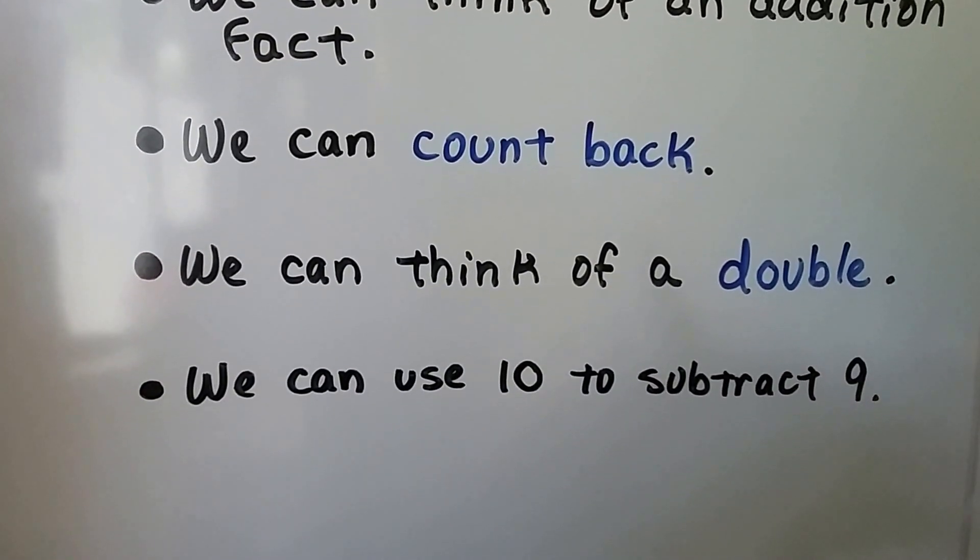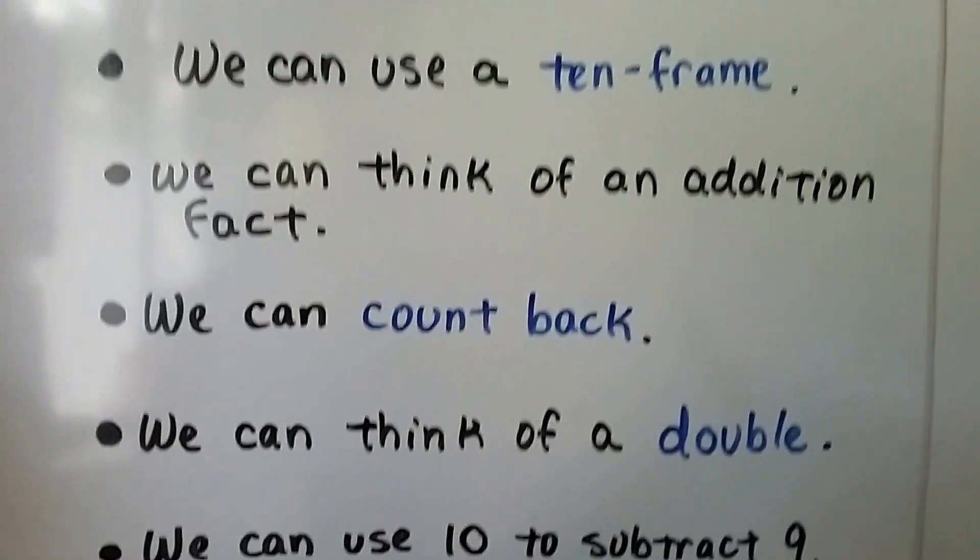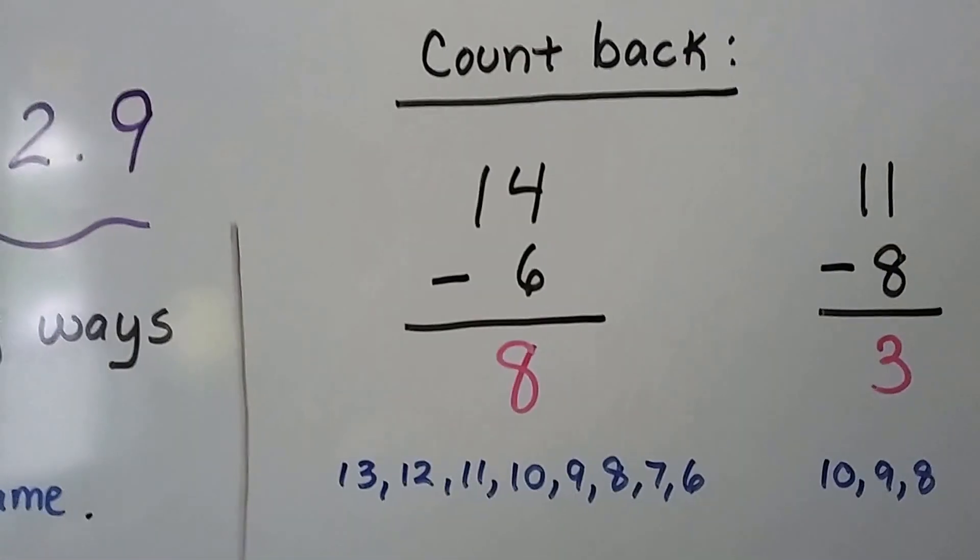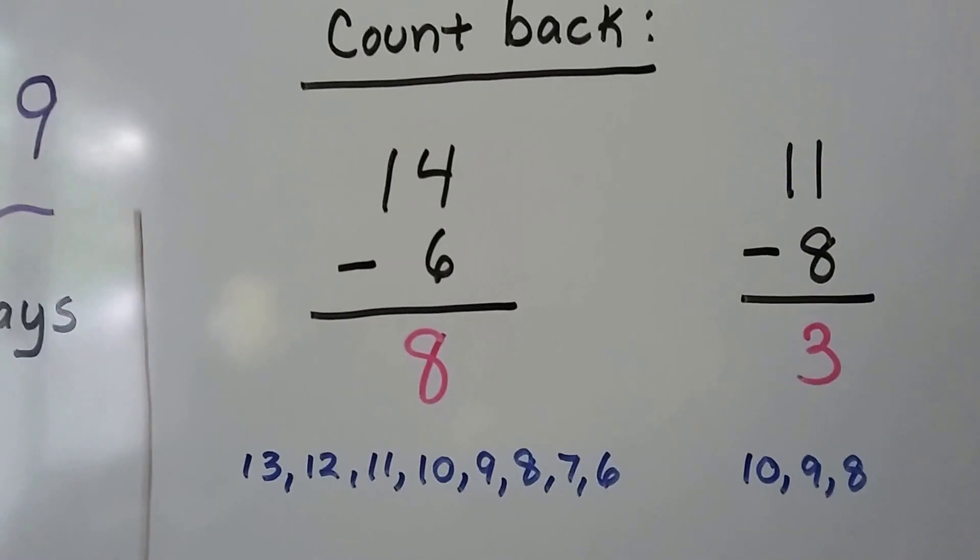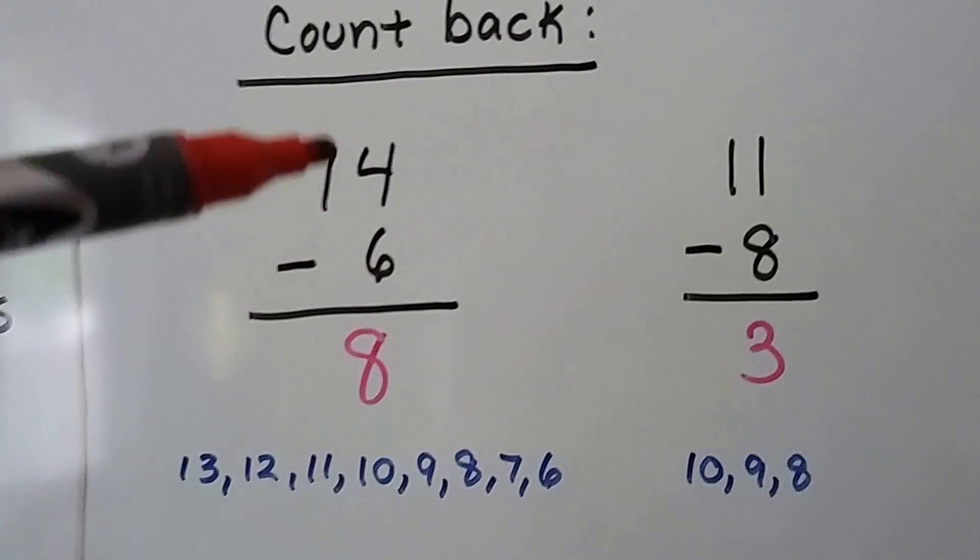We can think of a double, we can use 10 to subtract 9. To count back, we start at the minuend, the large number, and we count back until we get to the subtrahend, this number. So we start here and we count back until we get to that one.